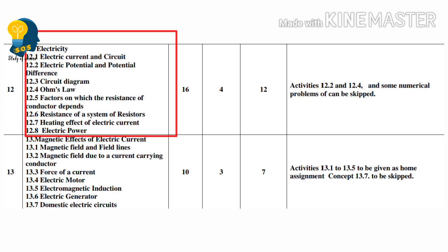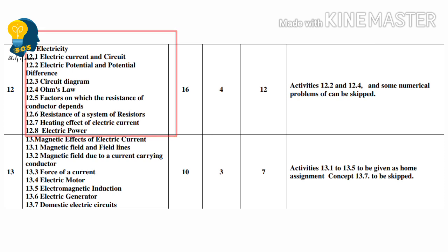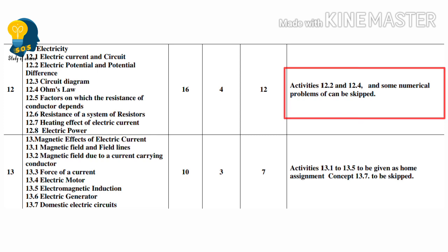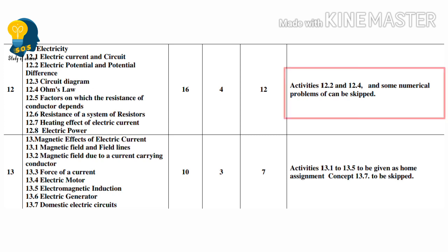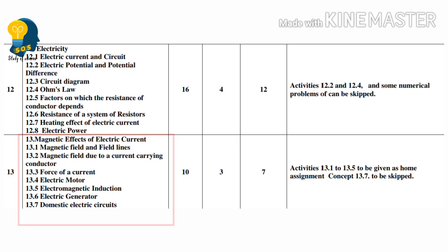Next lesson is Electricity. Important concepts: 12.1 Electric Current and Circuit, Electric Potential and Potential Difference, Circuit Diagram, Ohm's Law, Factors on which the Resistance of Conductors Depends, Resistance of System of Resistors, Heating Effect of Electric Current, Electric Power. Activities 12.2 and 12.4 — remove only those activities. Some numerical problems can also be skipped; there are chances numerical problems can be skipped in this electricity lesson.